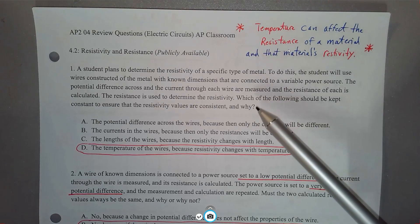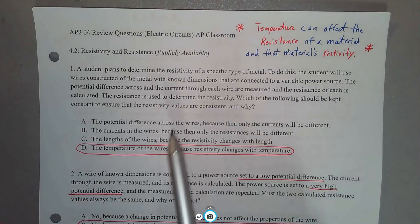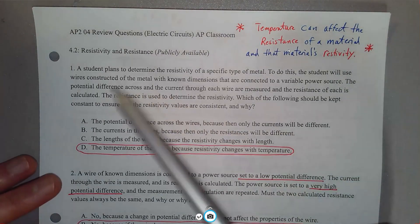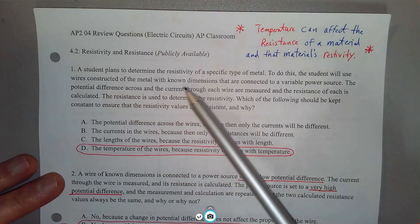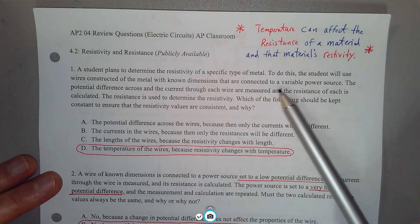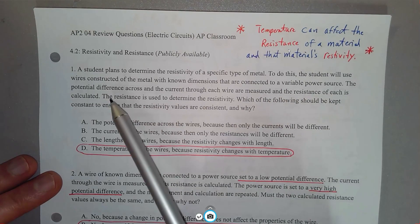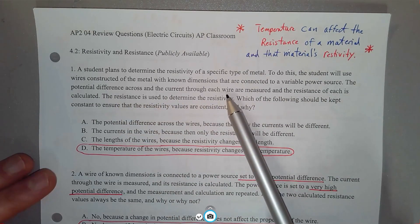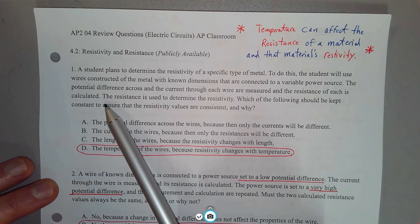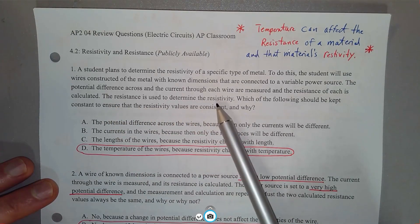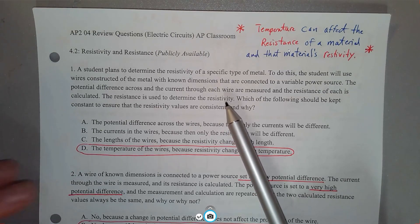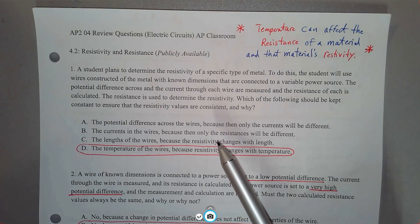Question 1: A student plans to determine the resistivity of a specific type of material. The student will use wires constructed of the metal with known dimensions connected to a variable power source. The potential difference across and the current through each wire are measured, and the resistance of each is calculated. The resistance is used to determine the resistivity.